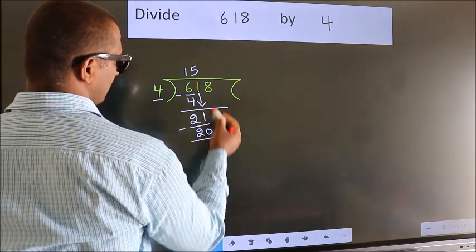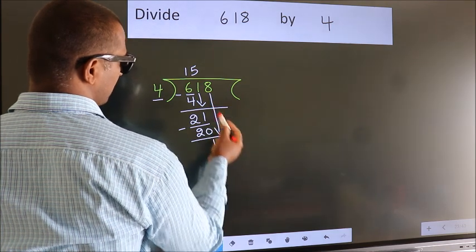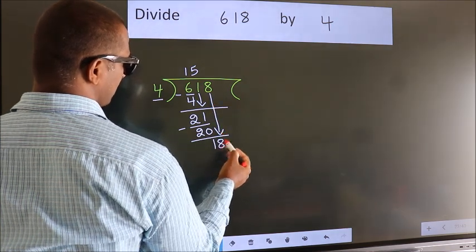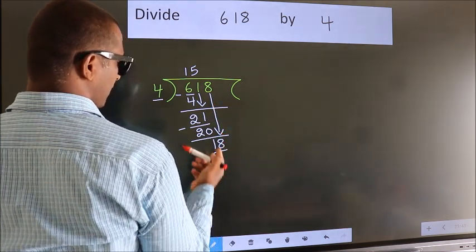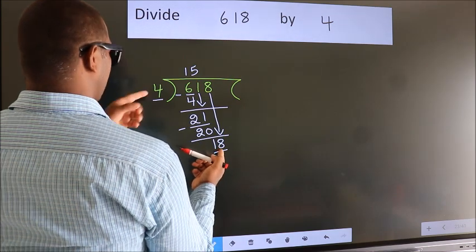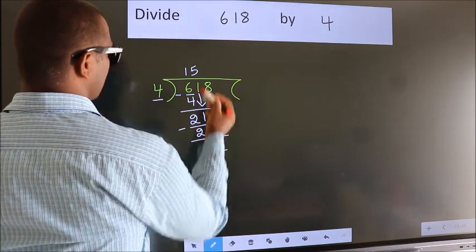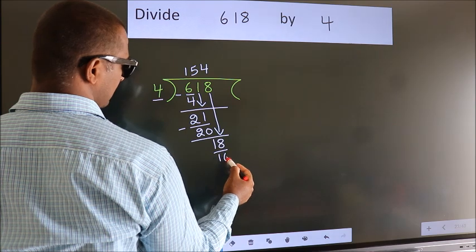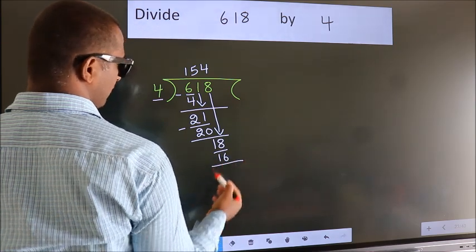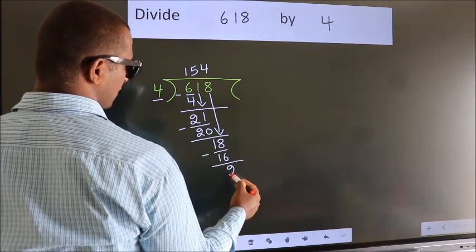After this, bring down the beside number. So 8 down. So 18. A number close to 18 in 4 table is 4 4s 16. Now we subtract. We get 2.